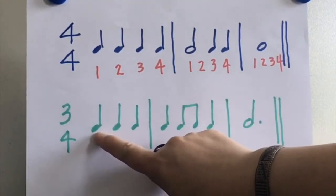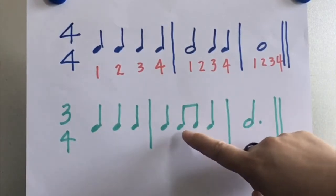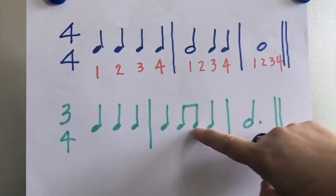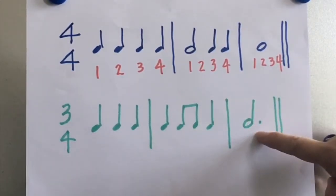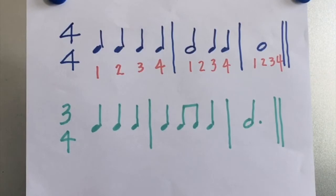These are quarter notes and they're worth one beat. These are eighth notes and they're each worth half a beat, and this is a dotted half note which is worth three beats.